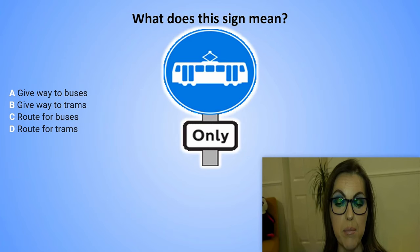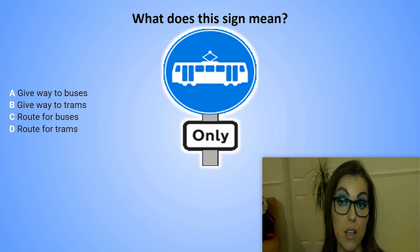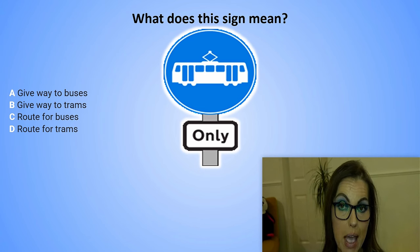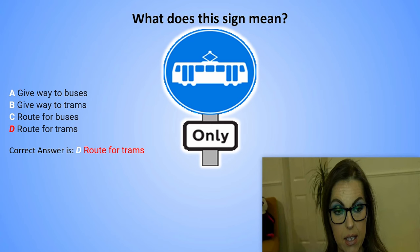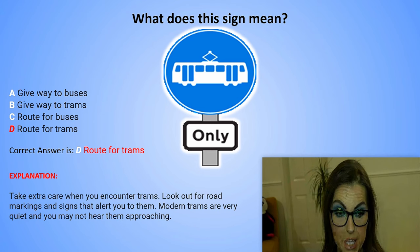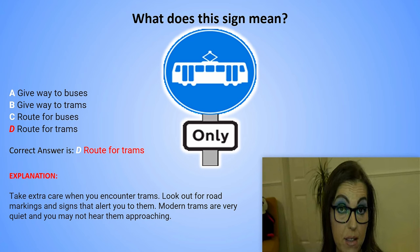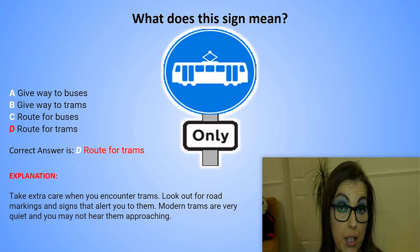What does this sign mean? A. Give way to buses. B. Give way to trams. C. Route for buses. Or D. Route for trams. The correct answer is D. Route for trams. Explanation: Take extra care when you encounter trams. Look out for road markings and signs that alert you to them. Modern trams are very quiet and you may not hear them approaching.